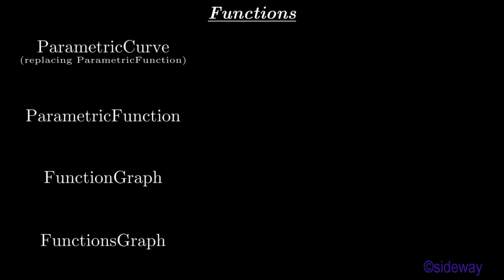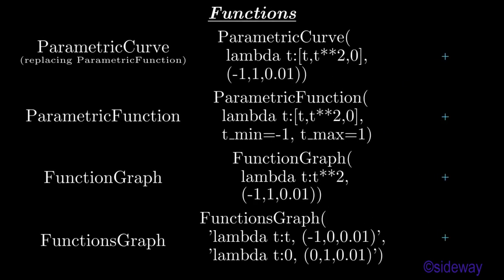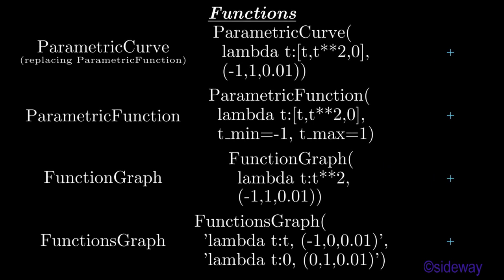In general, a functions vectorized mathematical object is used to generate a data curve with one independent variable. Types of functions vectorized mathematical objects are: parametric curve, parametric function, function graph, and functions graph.